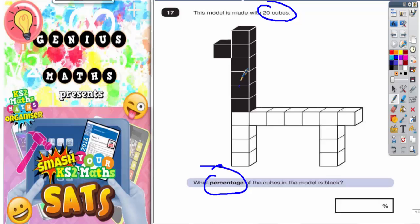So if we've got 20 cubes altogether, we've got 1, 2, 3, 4, 5, 6, 7 cubes which are black. So that makes 7 out of 20 which are black cubes. Now we've got to figure out what this is as a percentage.